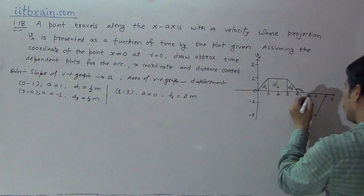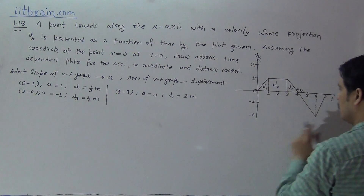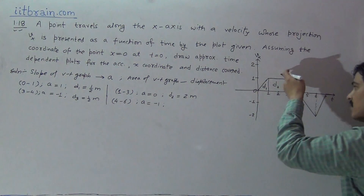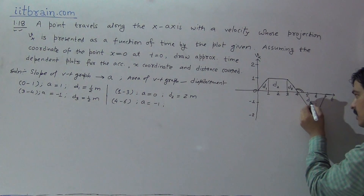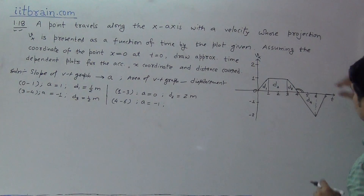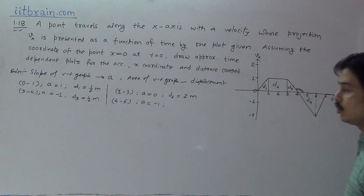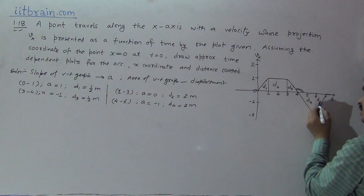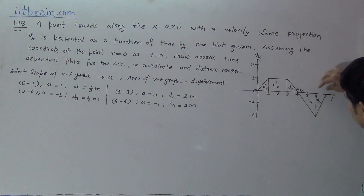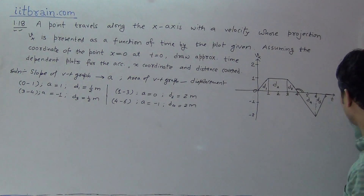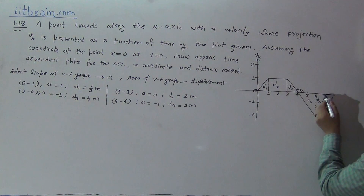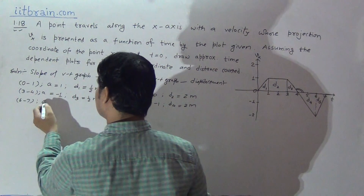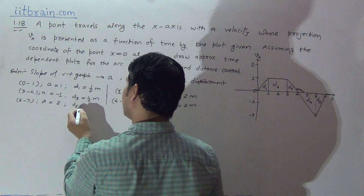In the fourth part, from 4 to 6 seconds, acceleration equals minus 1 again because the line continues with the same slope up to 6 seconds. The area of this segment D4 equals 1/2 × base × height = 1/2 × 2 × 2 = 2 meters, so displacement D4 equals 2 meters. In the last part, D5, area = 1/2 × 2 × 1 = 1 meter, and the slope is tan θ = 2/1 = 2, so from 6 to 7 seconds acceleration equals 2 and displacement D5 is 1 meter.